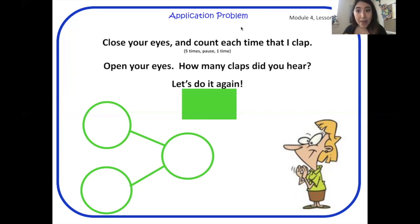And how many times did I clap the second time? Once. So five and one make six. Very nice.